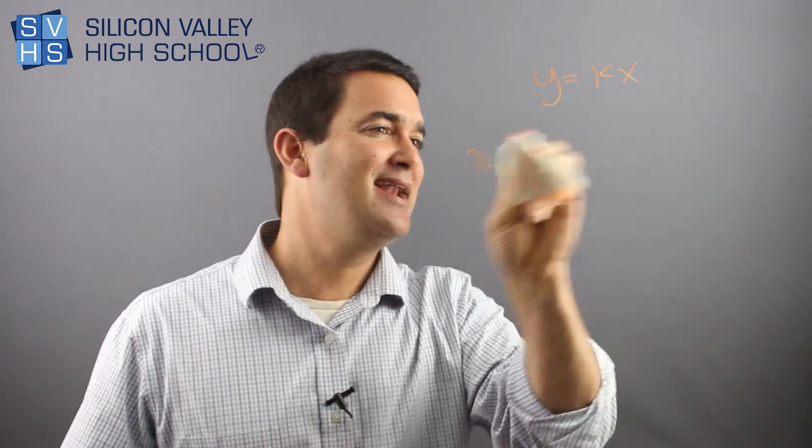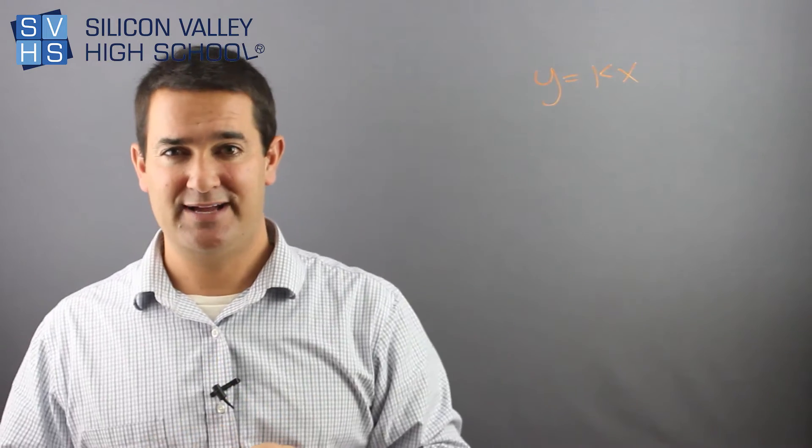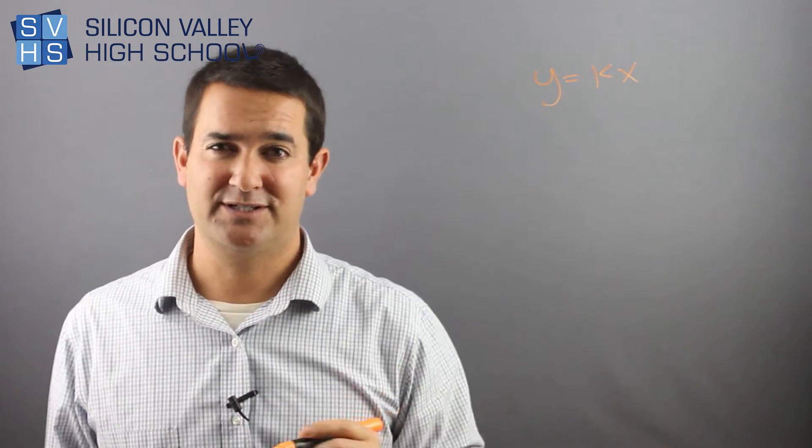So that aside, this is how you do typical problems with direct variation. Usually you solve for k first. Let me give you an example.